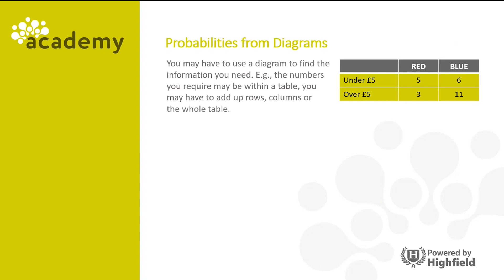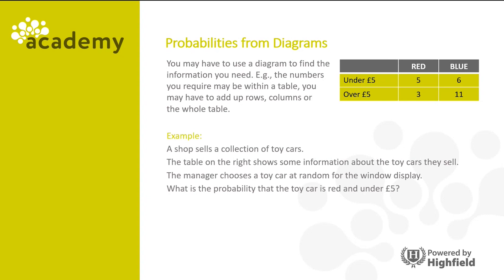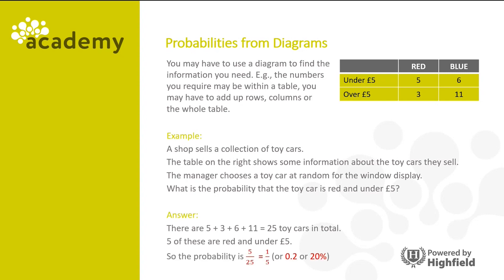You may have to use a diagram to find the information you need. For example, the numbers you require may be within a table, and you may have to add up the rows, columns or the whole table. In this example, a shop sells a collection of toy cars. The table on the right shows information about the toy cars they sell. The manager chooses a toy car at random for his window display. What is the probability that the toy car is red and under £5? First, we need to know how many toy cars there are in total. So 5 plus 3 plus 6 plus 11 is 25 cars in total. Five of these cars are red and under £5, so the probability is 5/25. Simplifying that fraction gives us one fifth, which is also 0.2 or 20%.